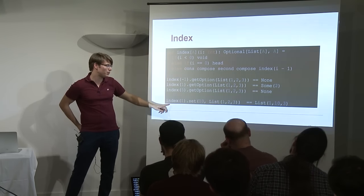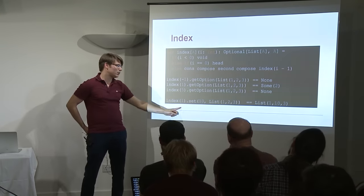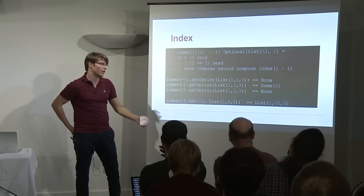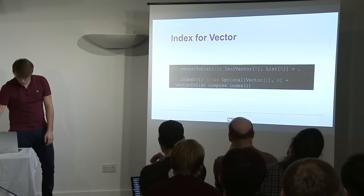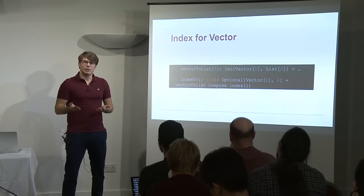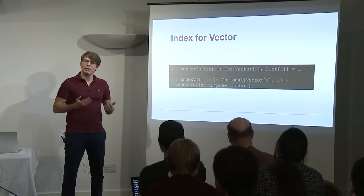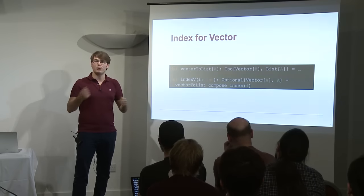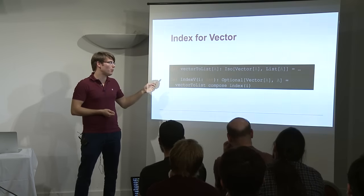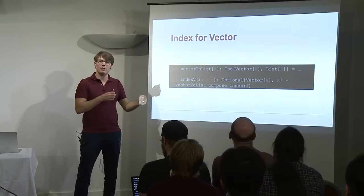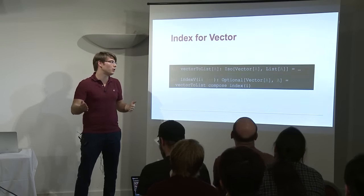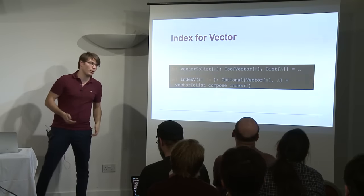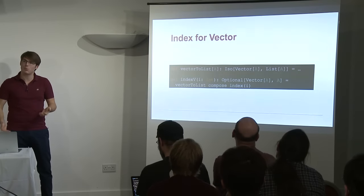If you try to set value 10 at index one, you get a new list where only the element at index one has changed. What's beautiful is we can easily get index for vectors because we have this ISO between Vector and List. So for index on vectors, we transform the vector into a list and compose it with our list index. We get all of them for free — maybe not the most efficient, but we get them very easily.